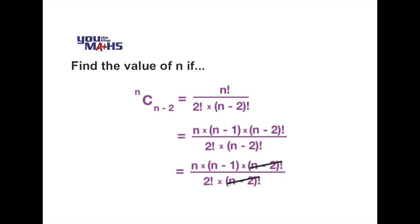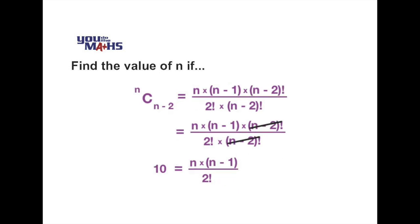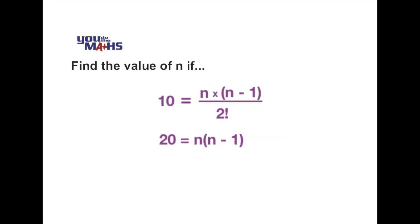After doing that division of n minus 2 factorial, we can see that we've got n multiplied by n minus 1 on the top line and 2 factorial on the bottom of the fraction, and of course all of that is still equal to 10. Now to simplify that, 2 factorial on the bottom is just 2 or 2 times 1, and we can multiply that across so the left hand side becomes 20.